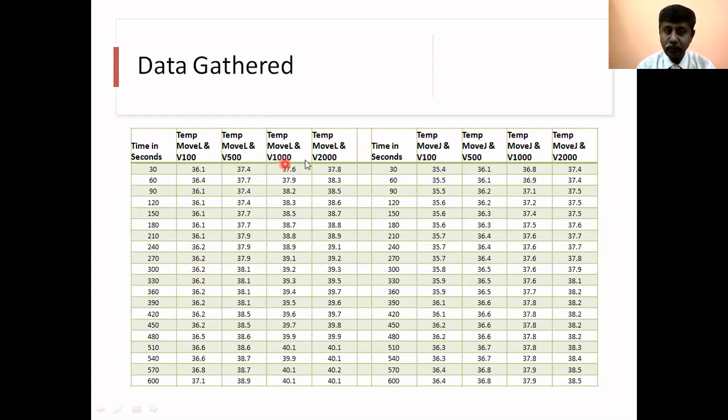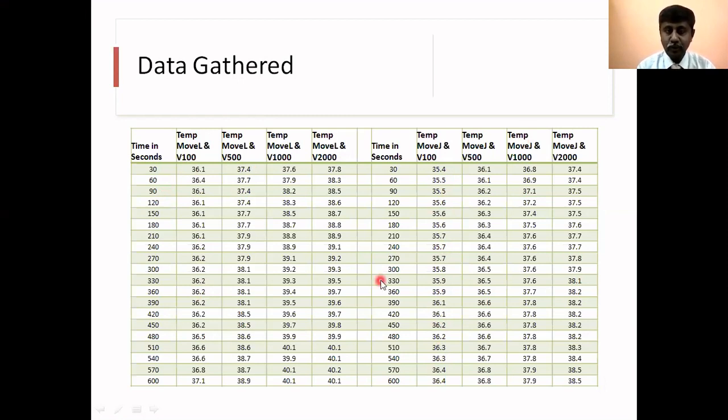Next I have changed it to 500, 1000, and 2000, and I have recorded all these readings. If I see these there is a remarkable difference between the first program and the second program. The program with the Move L command and the program with the Move J command - when you use a Move J command the temperature raise is slightly lesser.